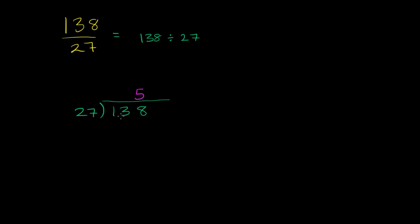Five times seven is 35. Five times two is 10, plus three is 13. Or another way to think about it, five times seven is 35. Five times 20 is 100. 100 plus 35 is 135.